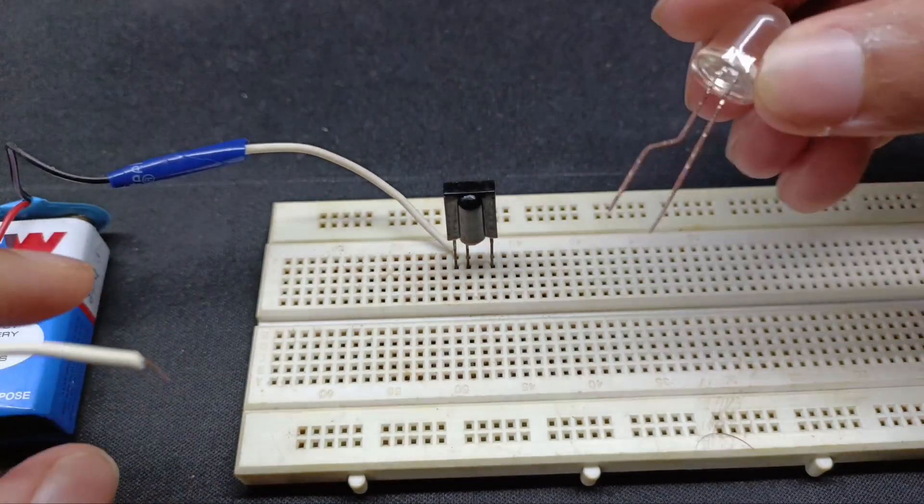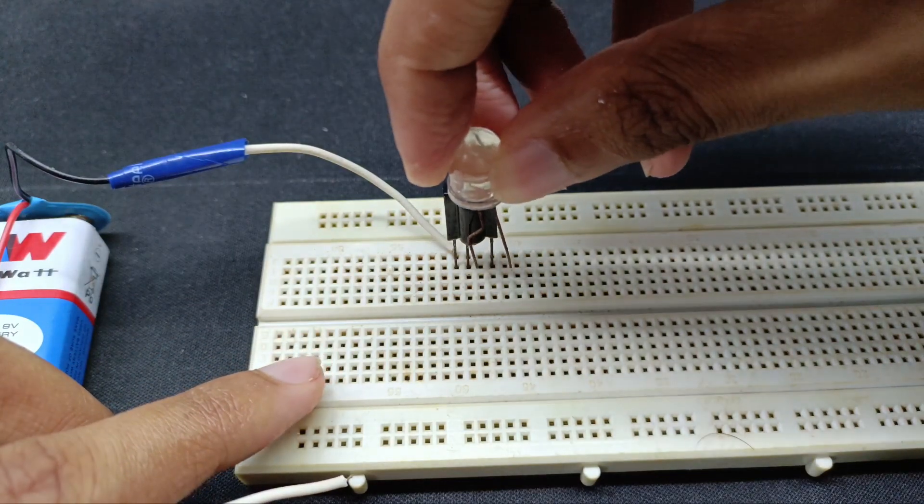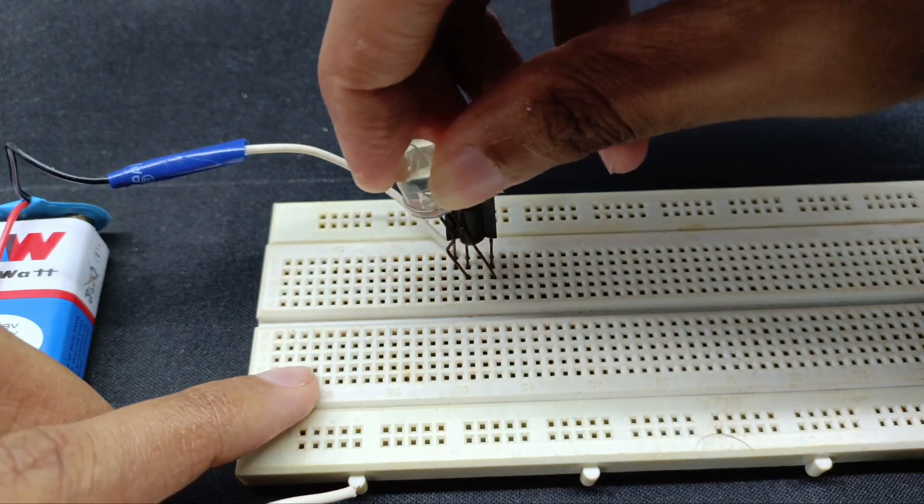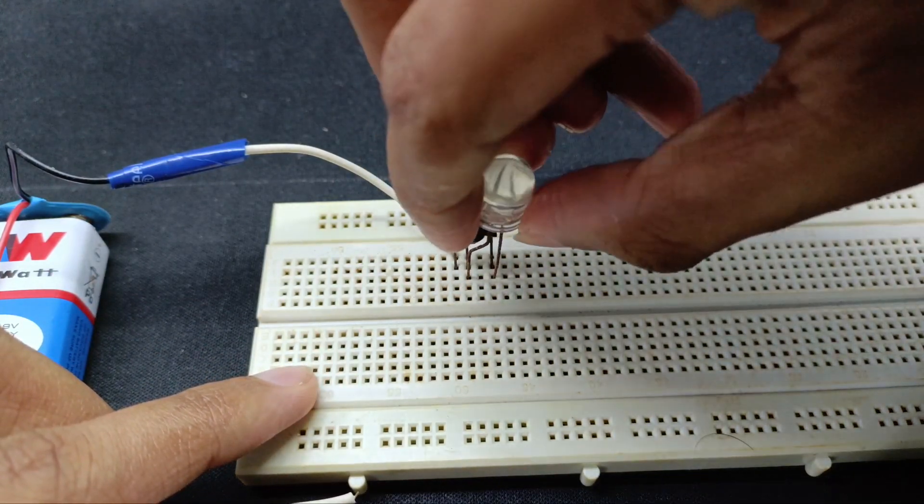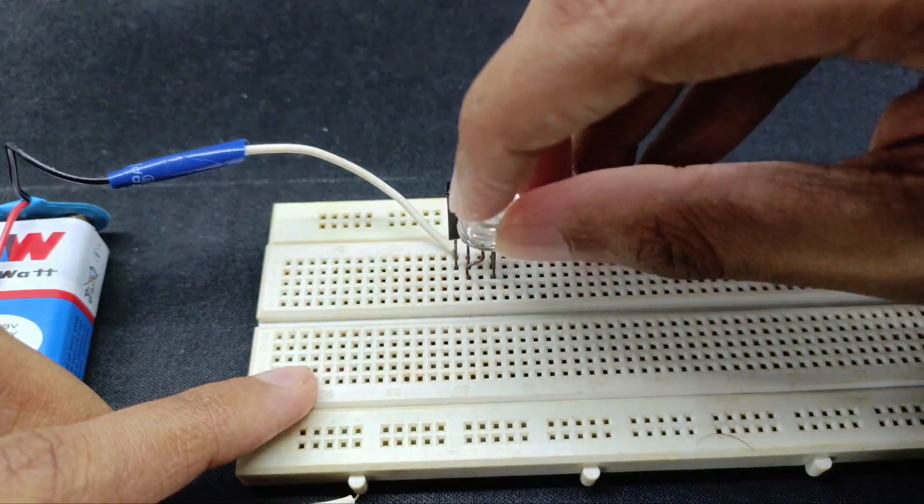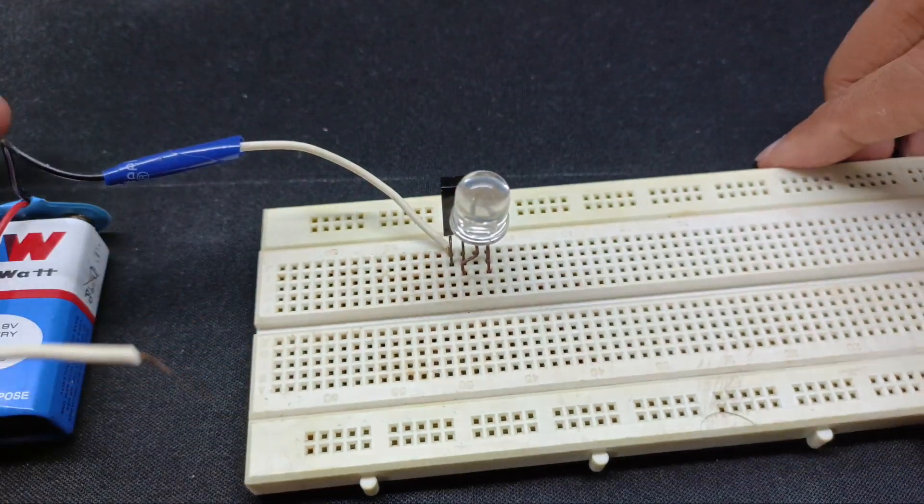Now let's connect the LED. Note that the LED has two pins. One is the longer pin and one is the shorter pin. The longer pin is called the anode which is the positive end, and the shorter pin is called the cathode which is the negative end.